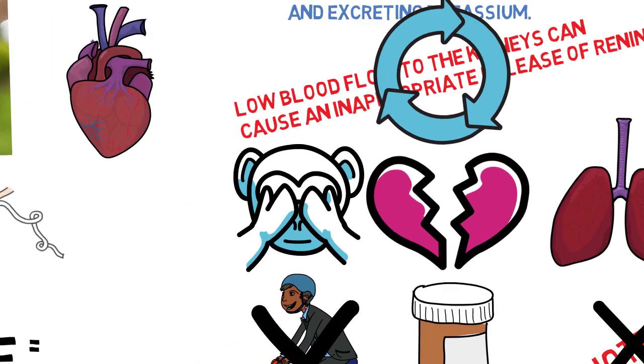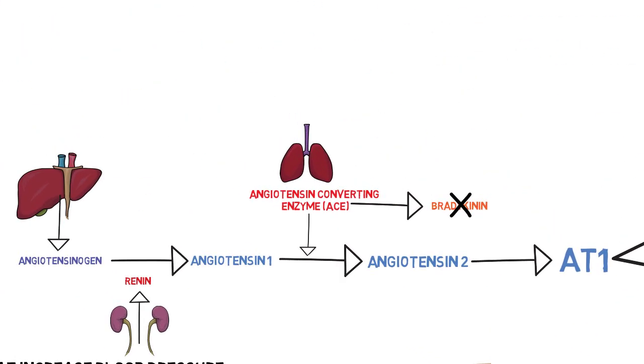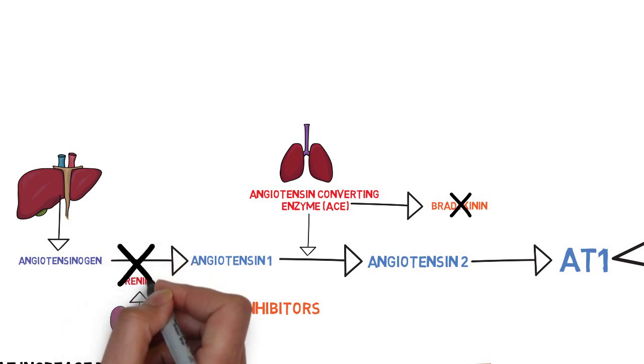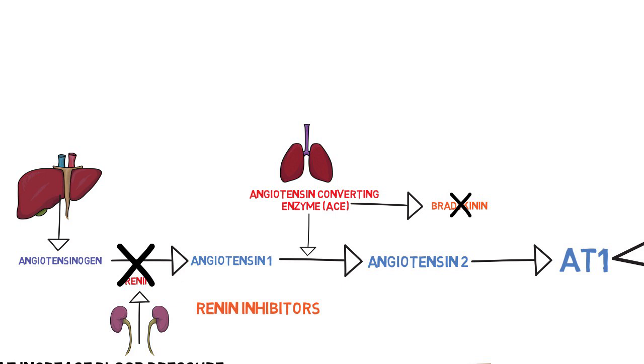There are three major areas in the system that can disrupt the formation and action of angiotensin 2. The first class of drugs is called renin inhibitors. They block renin and by doing so block the formation of angiotensin 1. An example of a drug that belongs to this class is aliskiren.